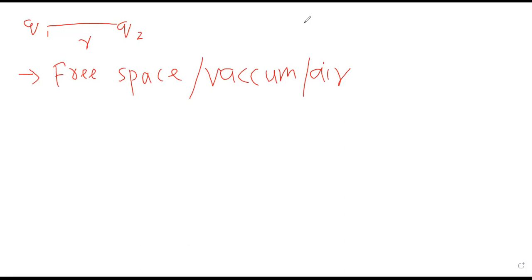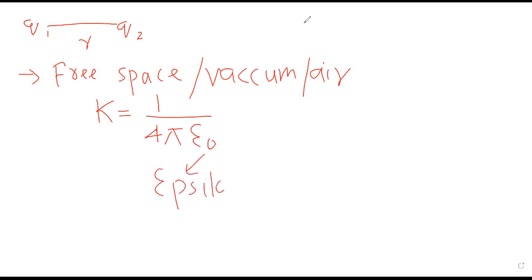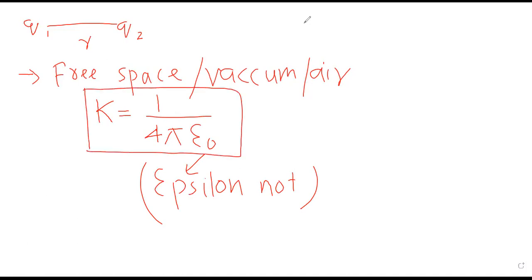In the case of free space, vacuum, or air, we have to substitute the value of k. Remember: if the medium is free space, vacuum, or air, then the value of k is 1 upon 4π epsilon-naught — k = 1/(4πε₀)। This term is pronounced as epsilon-naught। So epsilon-naught is being introduced here।